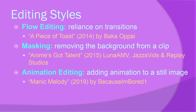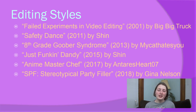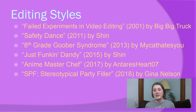Finally, we have animation editing, which isn't super common. It's an editing style where you take a still image and add your own animation to it — usually cutting out a segment of the still image and using your editing software to move it around artificially. MMVs use animation editing the most. On this slide I also want to give a shout out to some more AMV examples: Failed Experiments in Video Editing uses a creative mix of timing and animation editing; Safety Dance and 8th Grade Goober Syndrome make great use of timing editing; Just Funkin' Dandy uses timing editing plus a huge number of special effects; and Anime Master Chef and SPF use a lot of masking.